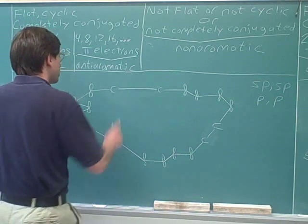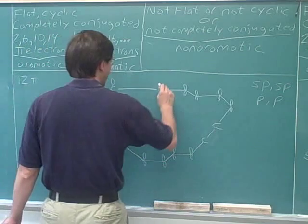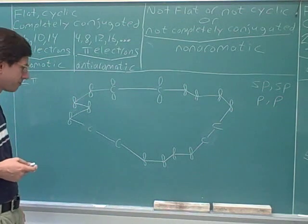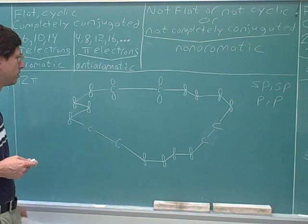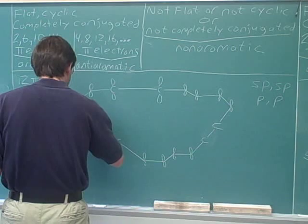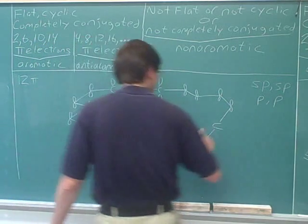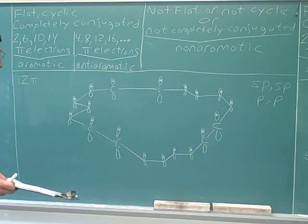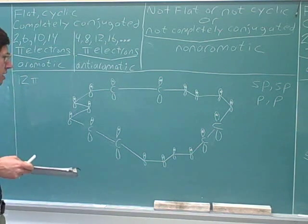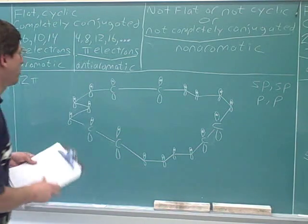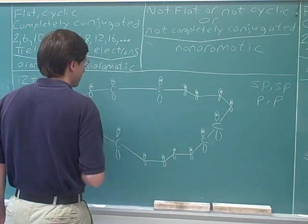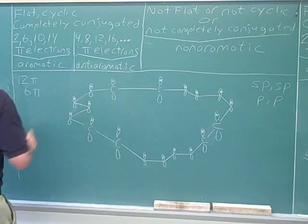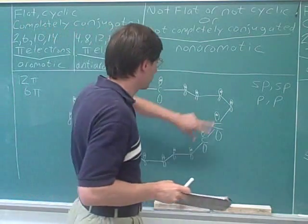So this carbon has two sp orbitals and two unhybridized p orbitals. I can show one p orbital on each of the triple-bonded carbons — that forms one of the pi bonds between these two carbons. I've done the same for the triple-bonded carbons down here. Now I've drawn p orbitals at every carbon in the ring and shown the electrons in those p orbitals. We have the 12 pi electrons from the double bonds, plus two pi electrons here, two pi electrons here, and two pi electrons here — that gives us six more pi electrons.